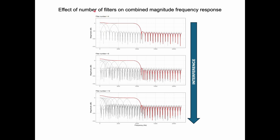As you can see, when only four filters are used, the combined magnitude response is almost flat indicating less interference. But as the number of filters increases, the combined magnitude is no more flat, indicating there is large interference due to interactions between the adjacent filters.